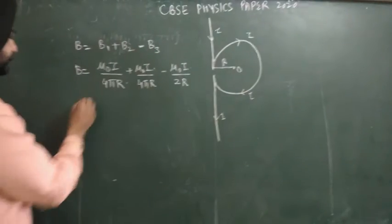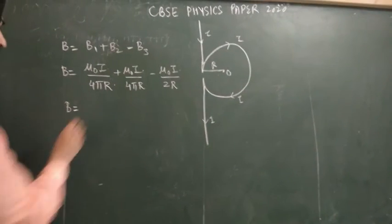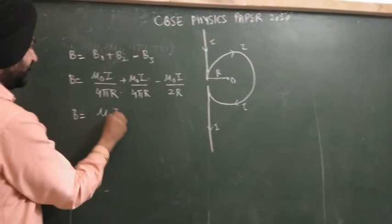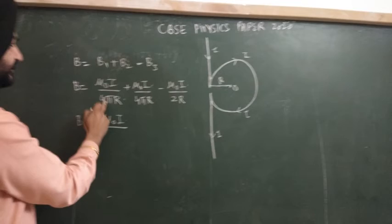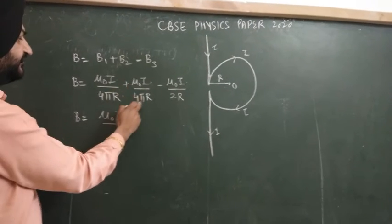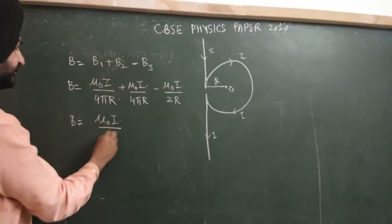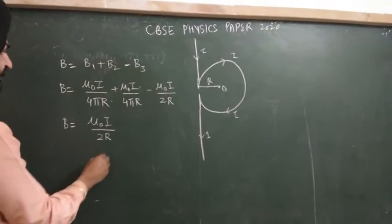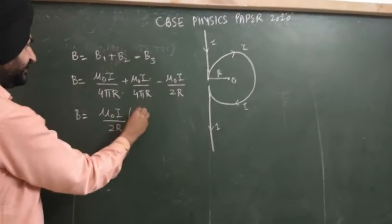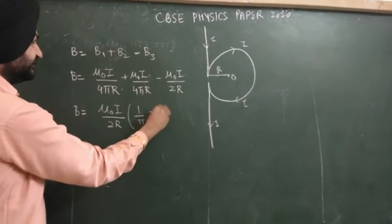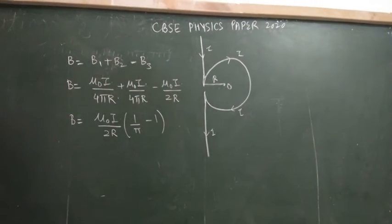Very simple. This is μ₀i by 4πr plus μ₀i by 4πr. It will be μ₀i by 2πr. The numerators are common, we are taking μ₀i. 2πr are common. It will be 1 by π. This is minus 1. That will be D option.